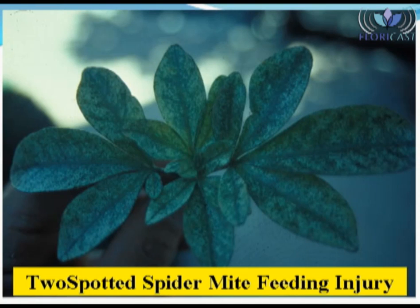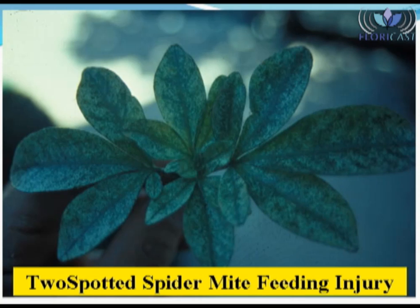Since two-spotted spider mites feed within the cell contents and remove chlorophyll from plant tissues, their feeding injury or damage to plants is often referred to as speckling. This is because plant leaves appear as if they've been poked with a fine pen. Sometimes two-spotted spider mite feeding damage causes plant leaves to appear bronzish in color.